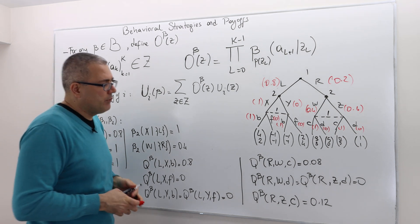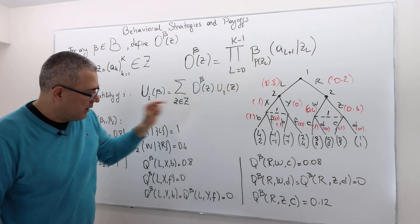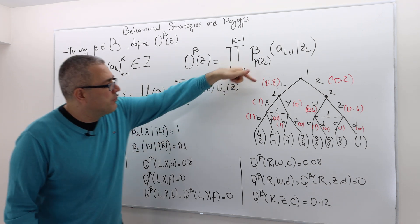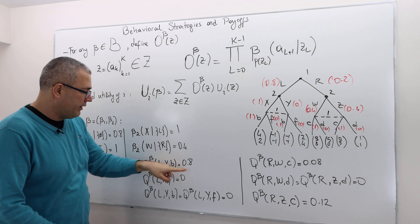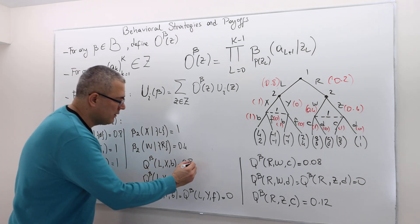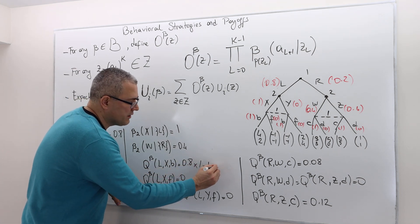You just multiply those probabilities all the way from the initial node to the payoff, meaning end of the history. For example, what is the likelihood of LXB? It's simple: 0.8 times 1 times 1, so it's just 0.8.